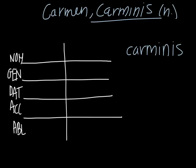and we know because it is the -is ending. And we're going to take that -is ending off in order to find our genitive stem, which in this case is going to be carmin.